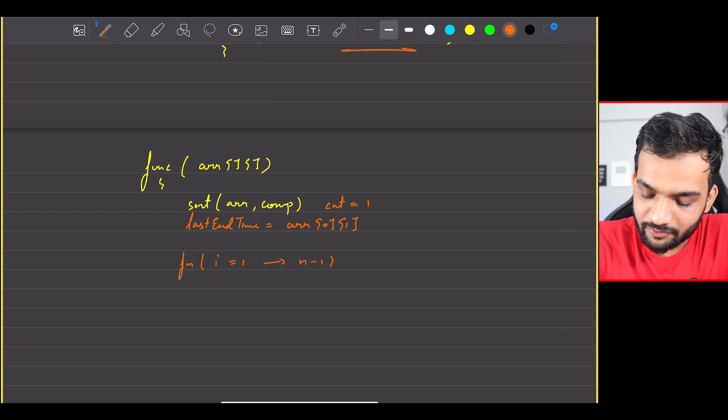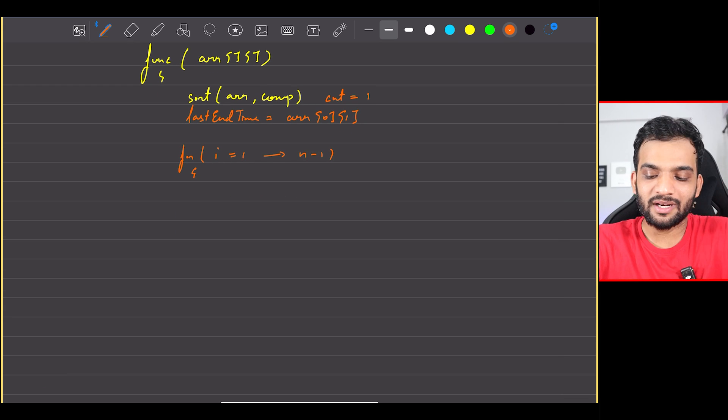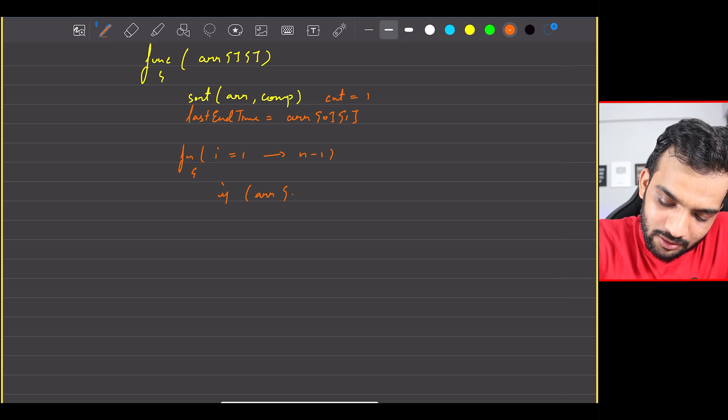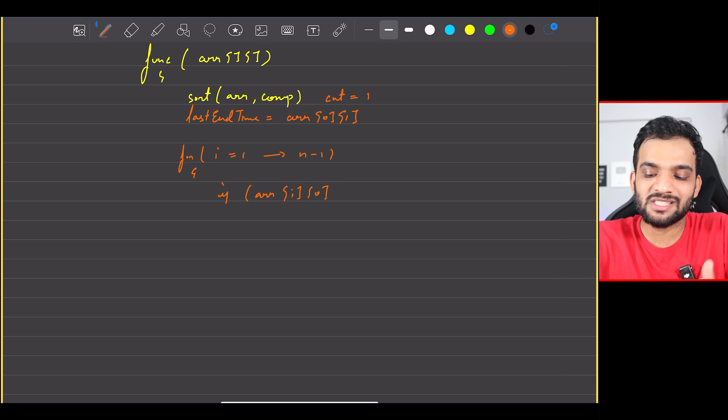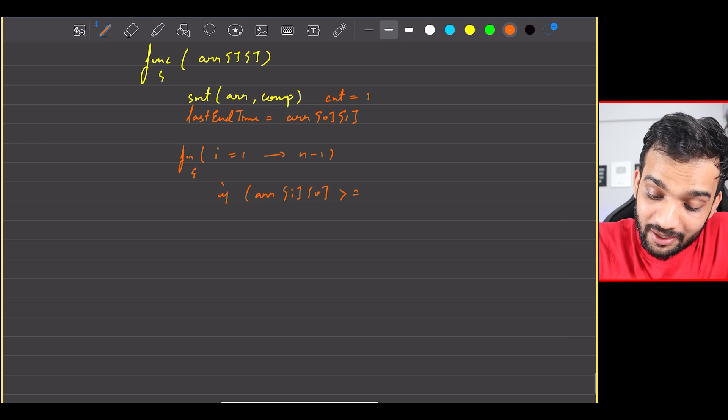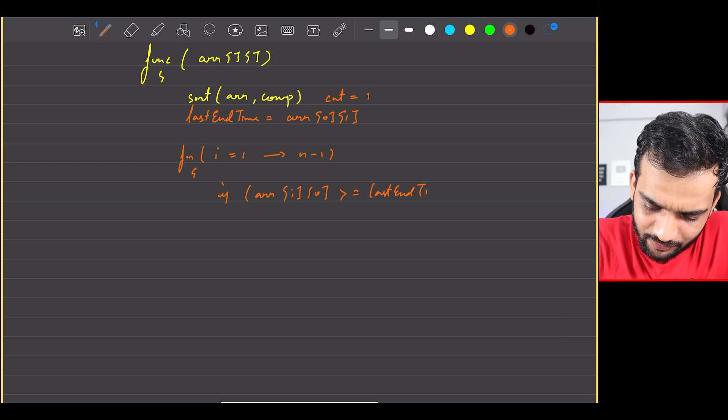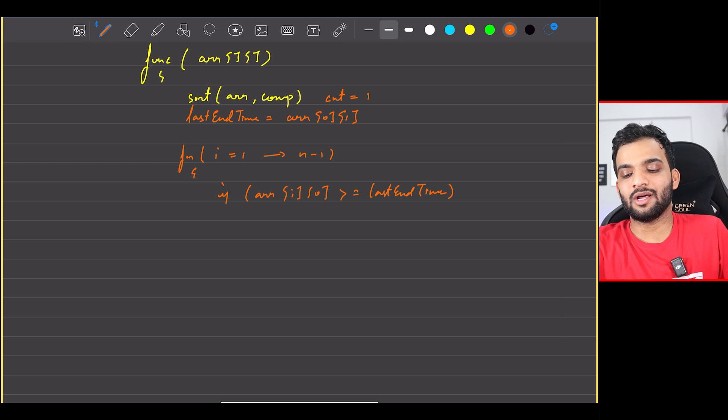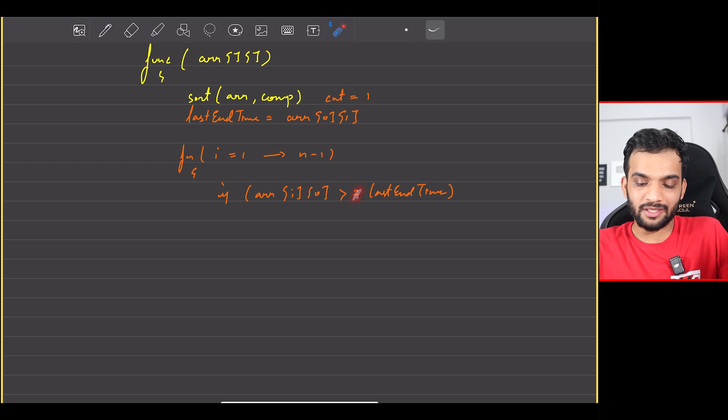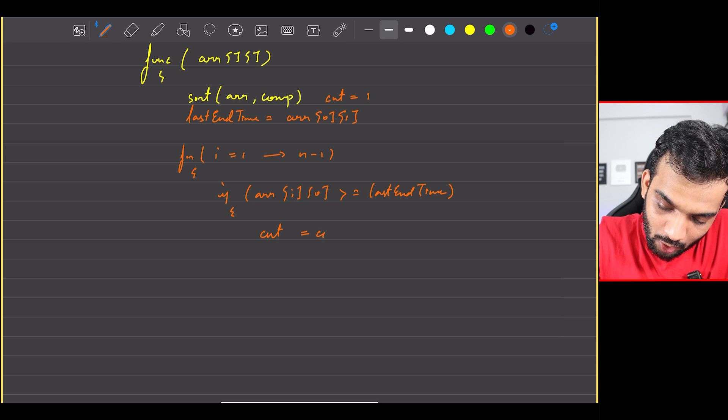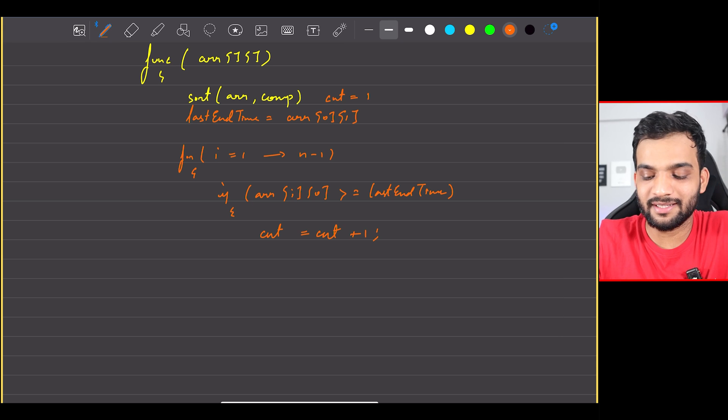What I can say is, hey listen, this meeting array of i of zero, so it can be started if the start time is greater than the last end time, because over here there's a slightly different condition of overlap. You know, other questions this equal to will not be there. Perfect. If this is the case, I can say count will be count plus one.